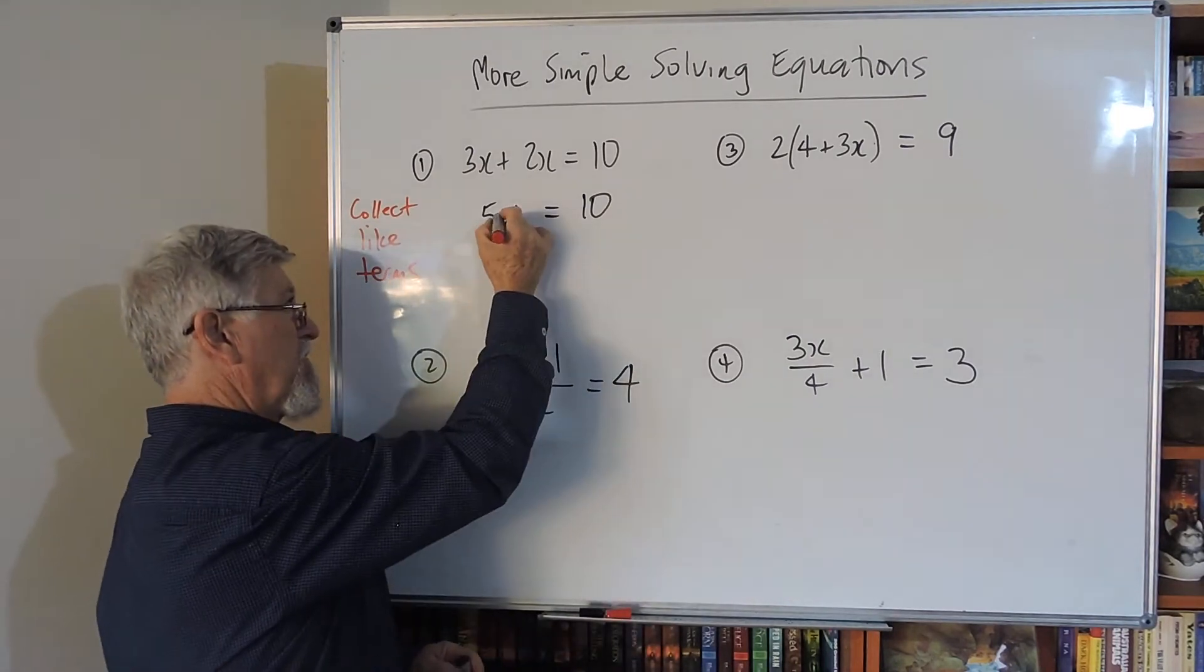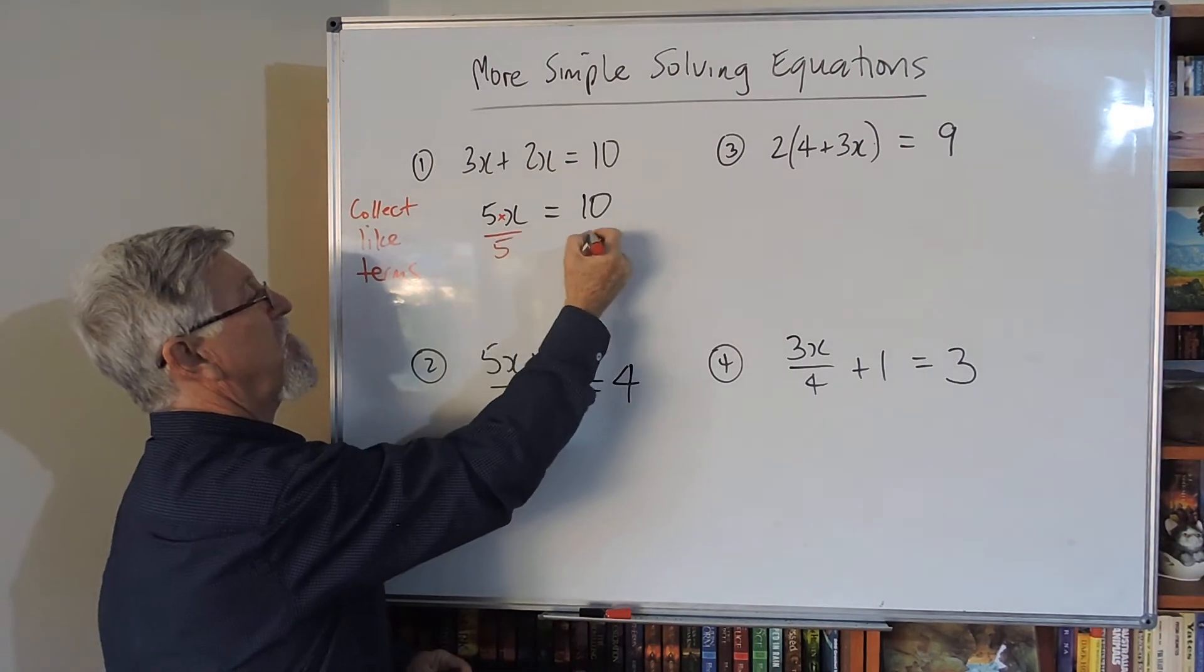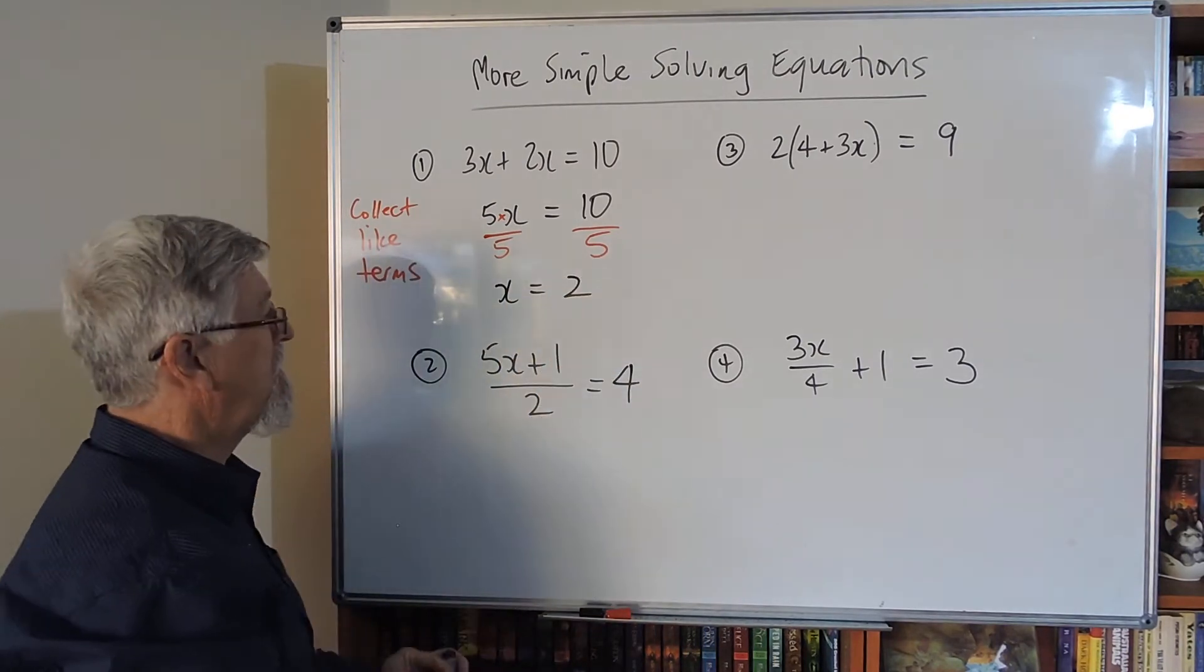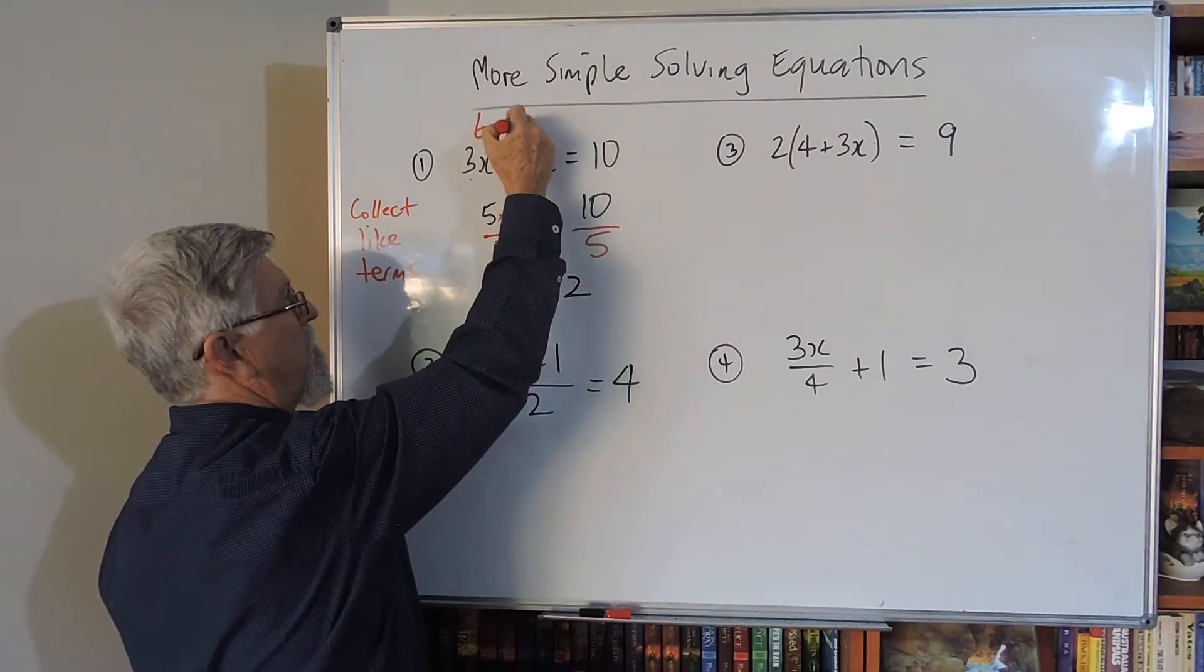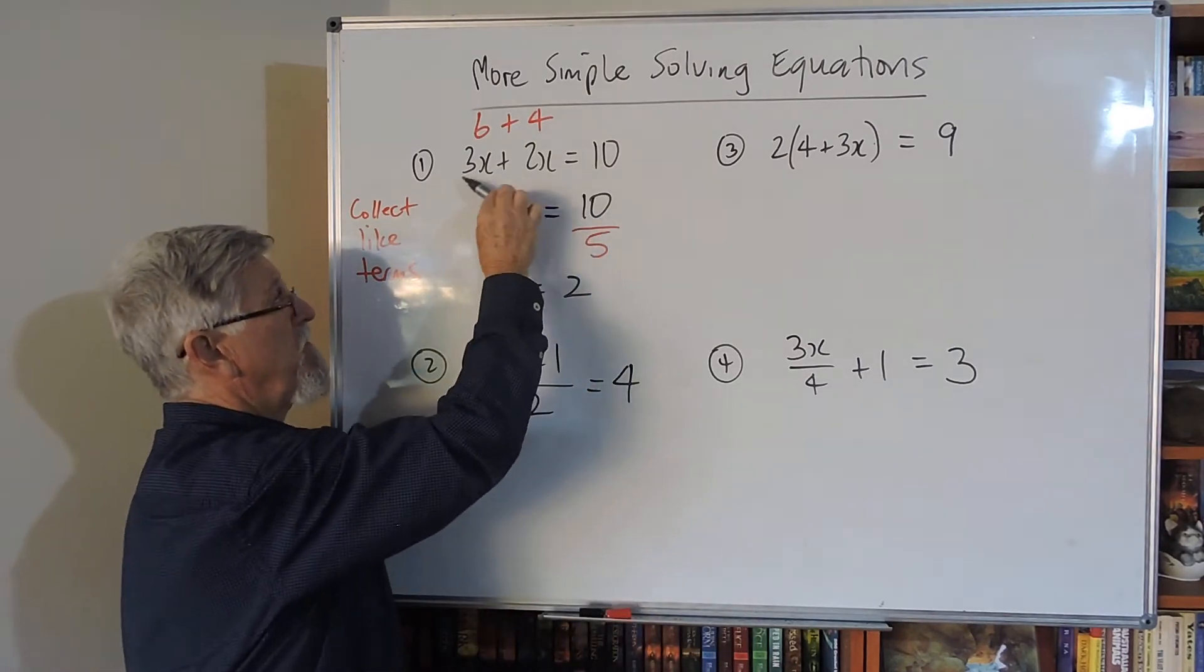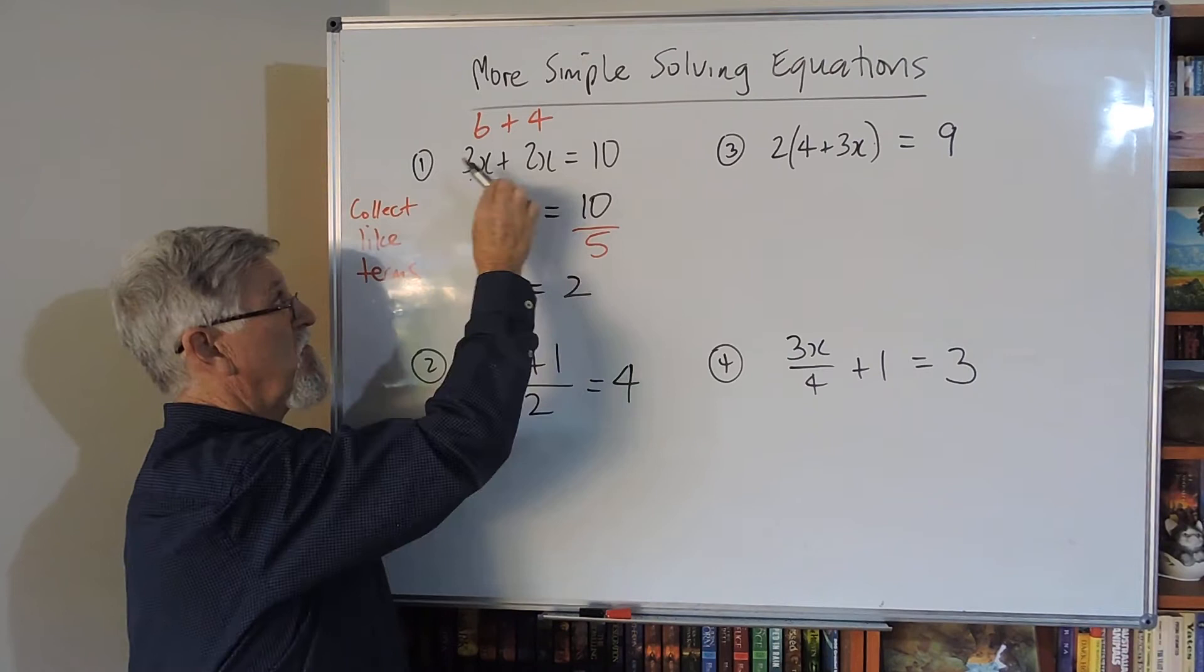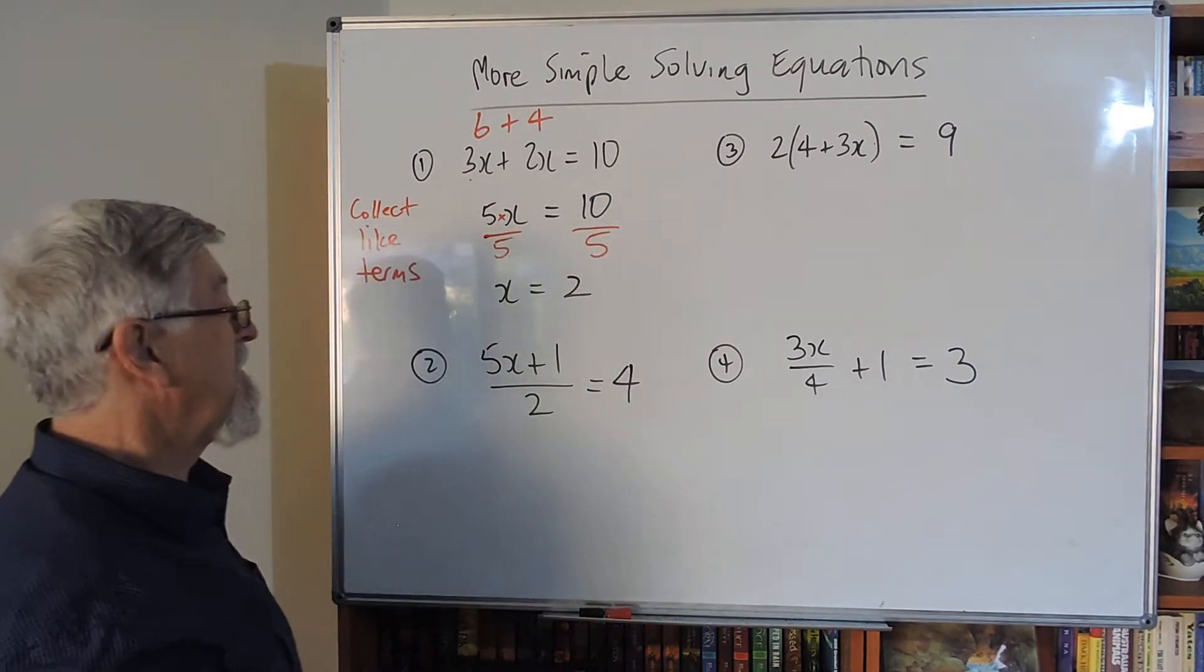Let's do it properly. Between them is a times, so how do I get rid of times by 5? Divide this side by 5, divide that side by 5. Five into ten goes twice, so x equals 2. Let's check: 3 times 2 is 6, 2 times 2 is 4, so 6 plus 4 makes 10. Collecting like terms is about adding those numbers where the x stays the same.